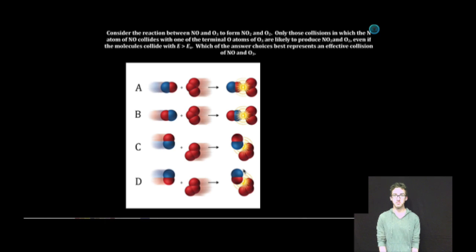Which of the answer choices best represents an effective collision of NO and ozone? First, let's identify which of the reactive molecules represents NO and which represents ozone. NO is going to be represented by the molecule on the left and ozone by the molecule on the right.